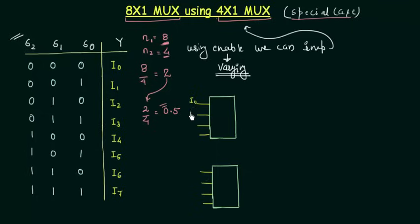This is I0, I1, I2, I3, similarly I4, I5, I6, and I7. This is 4x1, 4x1 and single output to each of these MUX.